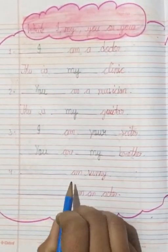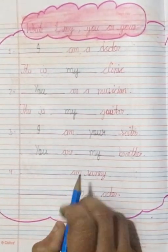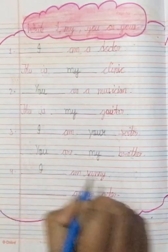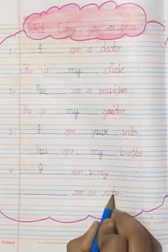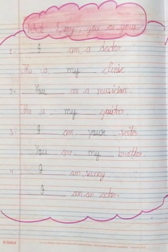And now dash am sunny. Am ka use ho raha hai. Toh kya lhe karenghe? I am sunny. Am an actor. Toh kya use karenghe? I am an actor.